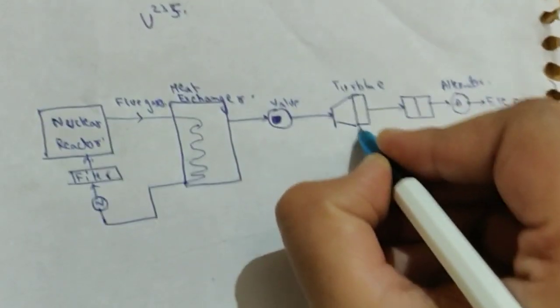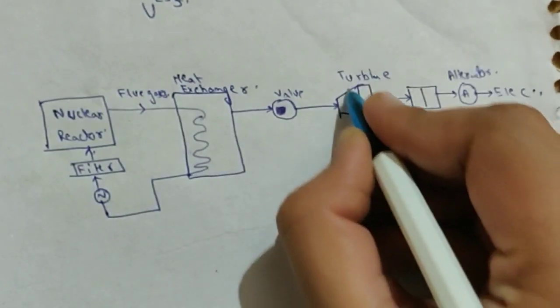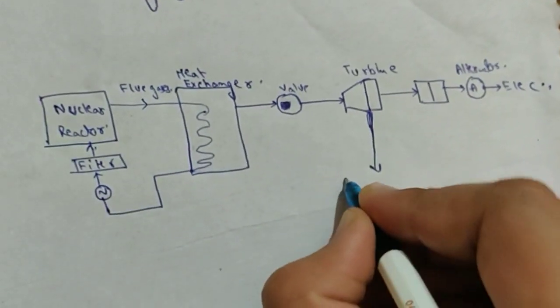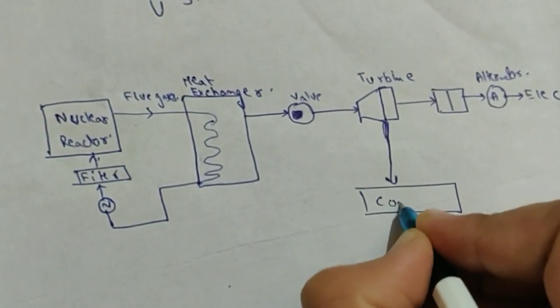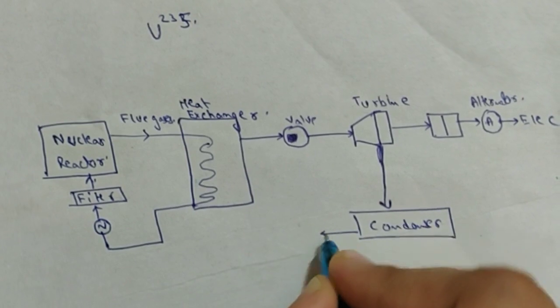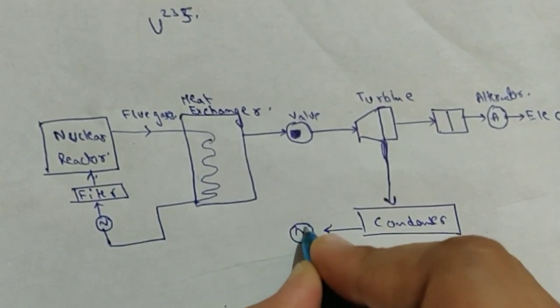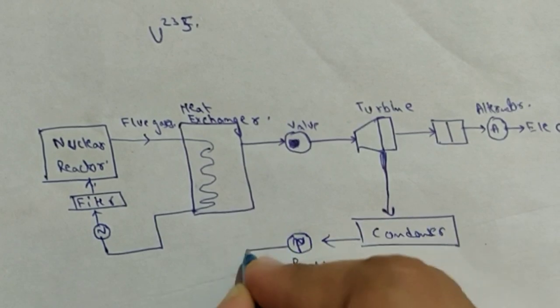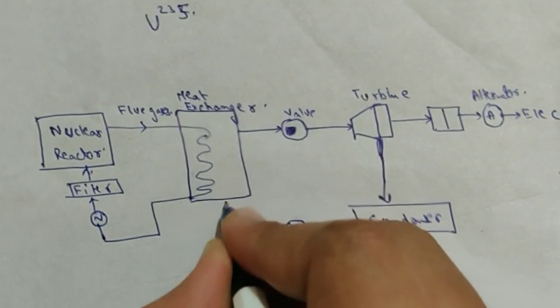The heat from the turbine which has already helped in rotation is passed through a condenser. And the cooled steam or the water is pumped, pumped back to the heat exchanger.